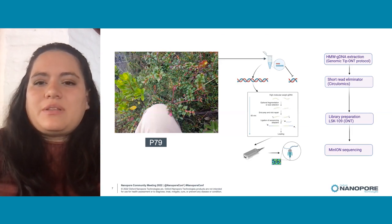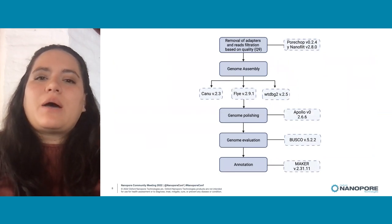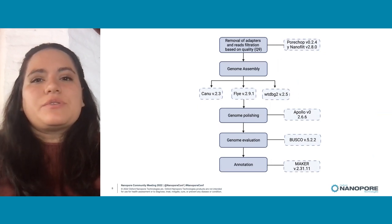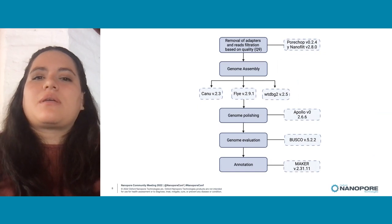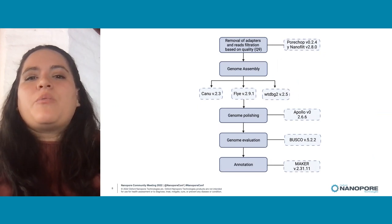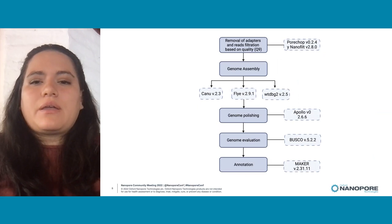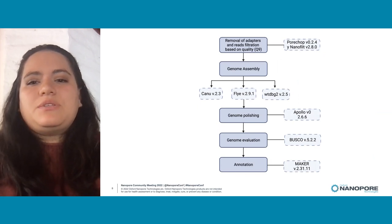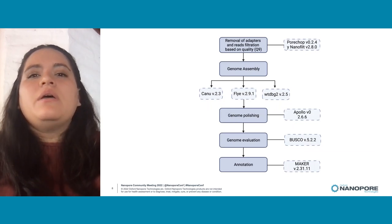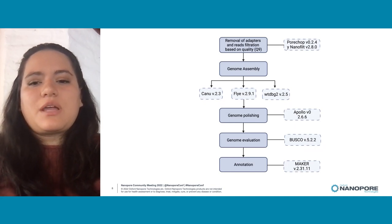With the data generated from these four sequencing runs, we performed a bioinformatic analysis. First, we removed the adapters using a program called Porechop, then did read filtration based on quality using NanoFilt. We performed genome assembly using three different assemblers: Flye, Canu, and WTDBG2. After that, we performed genome polishing using Apollo, a genome evaluation using BUSCO, and finally an annotation step using MAKER — though the annotation step is still being performed and results will not be presented here.